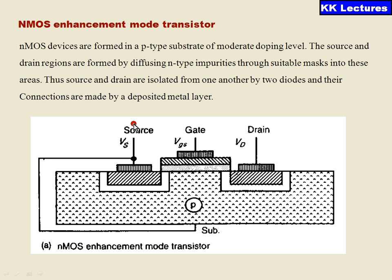Totally it has three terminals: one is source, the other is gate, and the third one is drain. We are showing it as Vs for source, Vgs as the gate-to-source voltage, and Vd as the drain voltage.